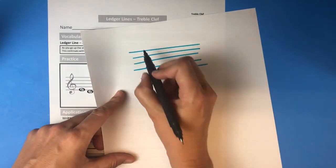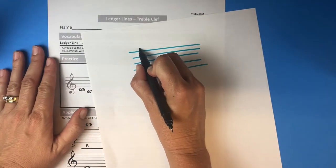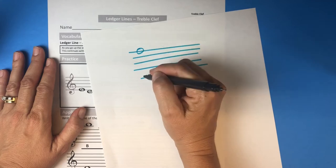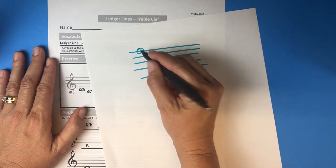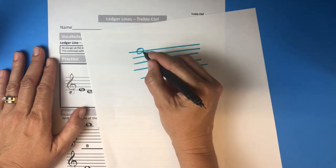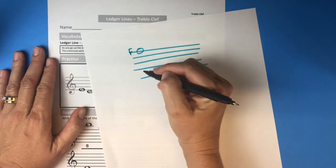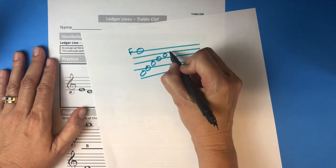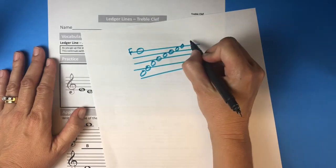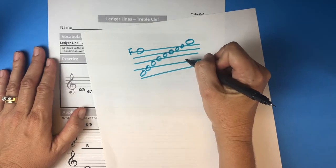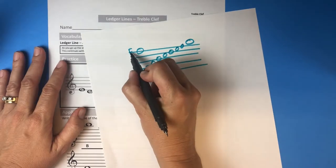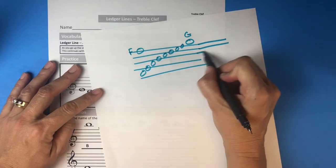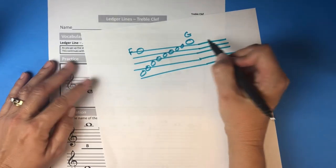Your top line is F. We talked about that last time - Elvis's guitar broke down Friday, or every good burger deserves fries. Okay, so this top line is an F, we know that for sure. The next note up, if you're going along space-line-space-line, the next one is going to be right here and it's going to be the next note in the alphabet, which is after F is G.